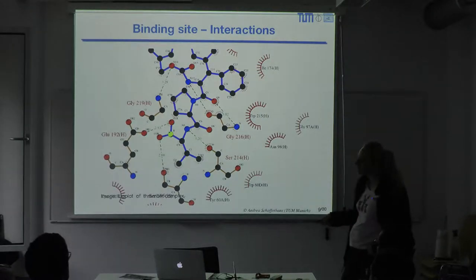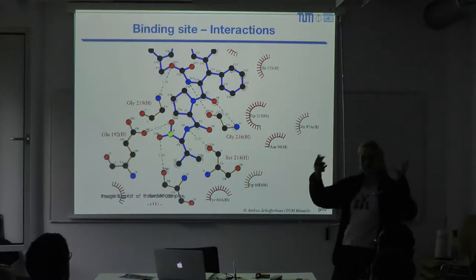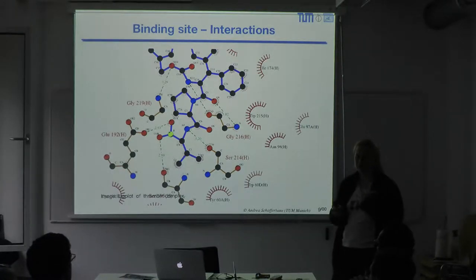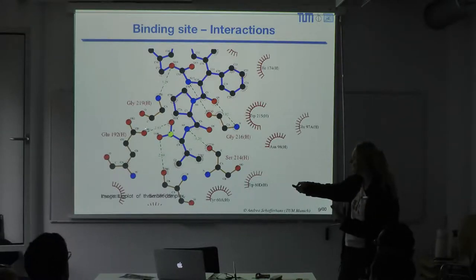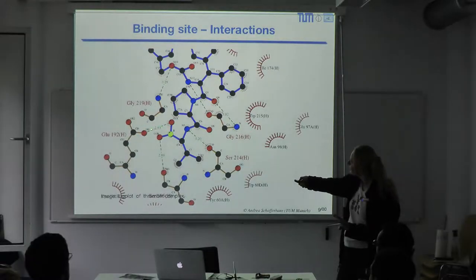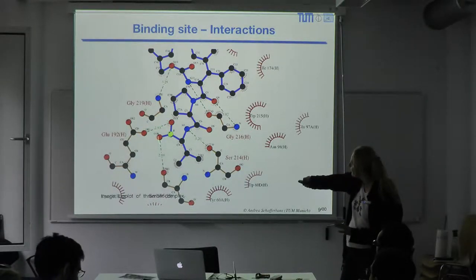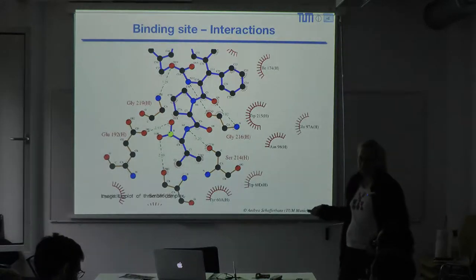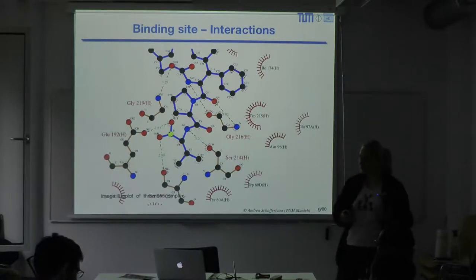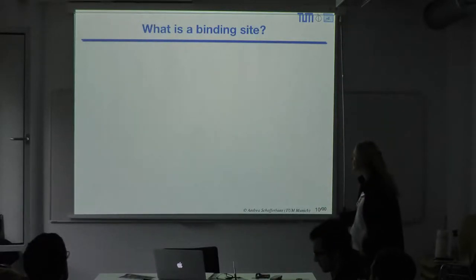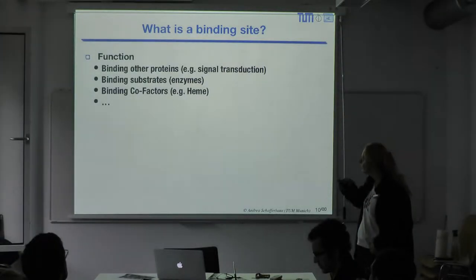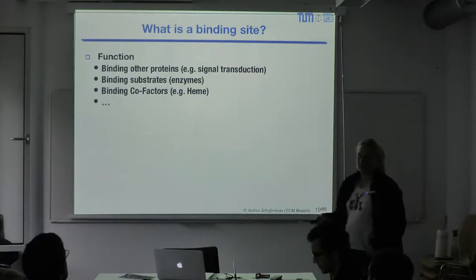When chemists analyze binding sites, we often project them into 2D, which makes it easier to highlight interactions — you can draw hydrogen bonds and other contacts more clearly. A nice way of looking at this is with the LigPlot program; if you want to examine PDB structures and how they interact with ligands, I recommend it because it annotates the structure for you.